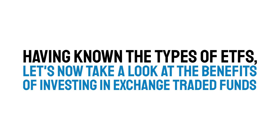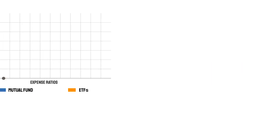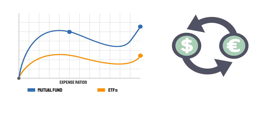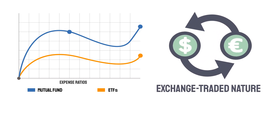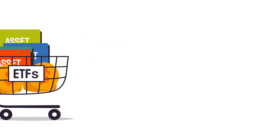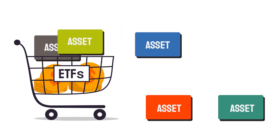Five advantages of ETFs. One: lower transaction cost and fees. ETFs typically have significantly low expense ratios compared to a comparable mutual fund. This is in part because of their exchange-traded nature, which places typical costs on the brokers or the exchange, in comparison with a mutual fund which must bear the cost in aggregate. Two: accessibility to market.